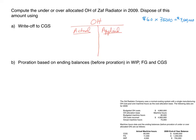Now that we have the applied amount, we put it in our overhead T-account — $4.5 million goes on the credit side because that's where applied overhead is recorded. The actual overhead from the data is $4,900,000. Our debits exceed our credits, so we have a debit balance of $400,000. We did not apply enough cost, so we are under-applied.